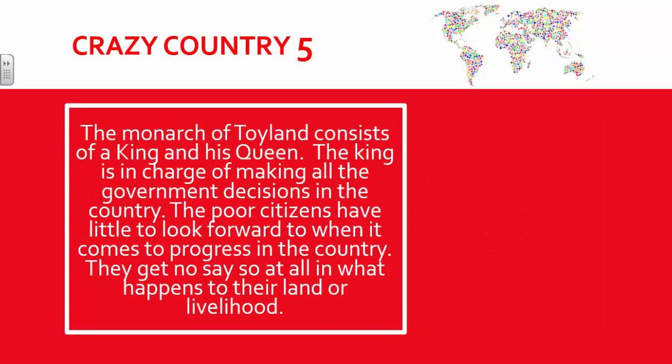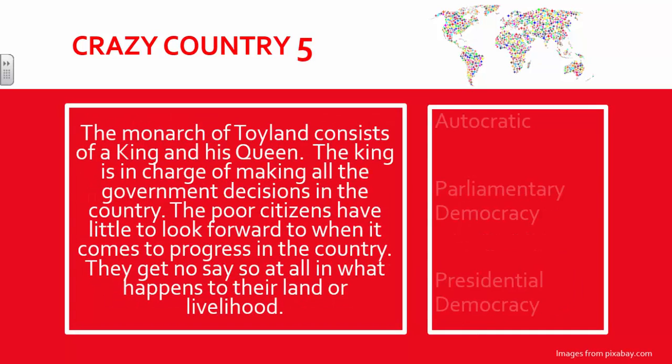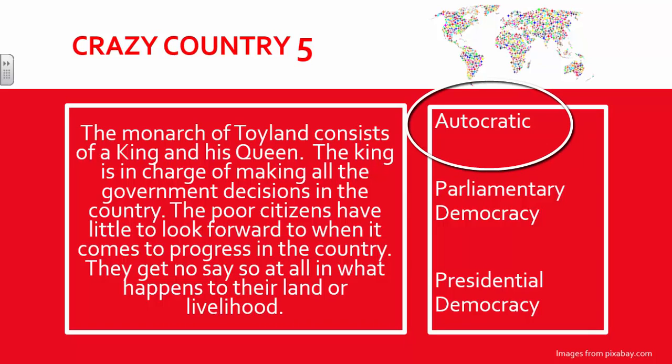A final example: the monarch of Toyland consists of a king and his queen. The king is in charge of making all the government decisions in the country. The poor citizens have little to look forward to when it comes to progress, and get no say-so at all in what happens to their land or livelihood. This is another example of autocracy. With this example, you can extend your discussion to the term monarchy.